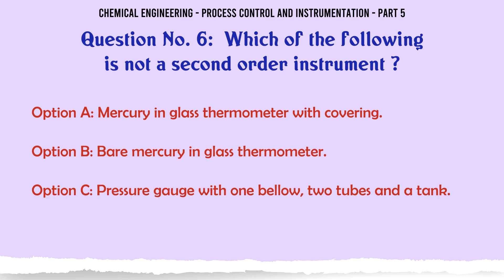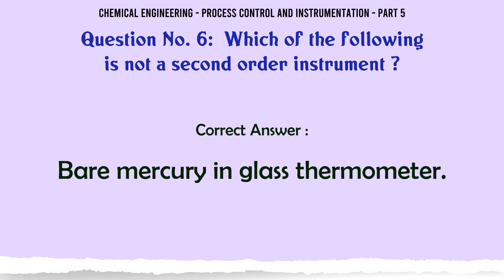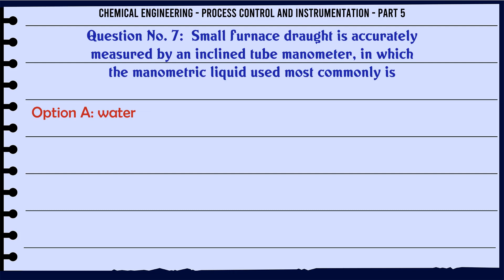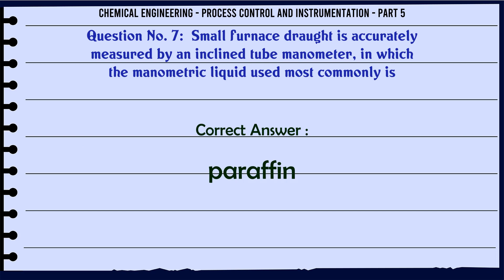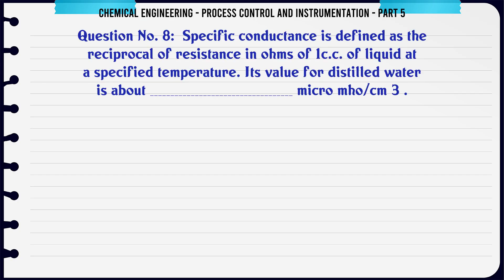Which of the following is not a second order instrument? A. Mercury in glass thermometer with covering. B. Bare mercury in glass thermometer. C. Pressure gauge with Bourdon tubes and a tank. D. None of these. The correct answer is Bare mercury in glass thermometer.